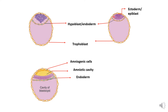A space arises between the ectoderm and the trophoblast, and that space is called the amniotic cavity. The amniotic cavity is lined by ectoderm below and trophoblast above. The trophoblast also produces a type of cells called amniogenic cells.